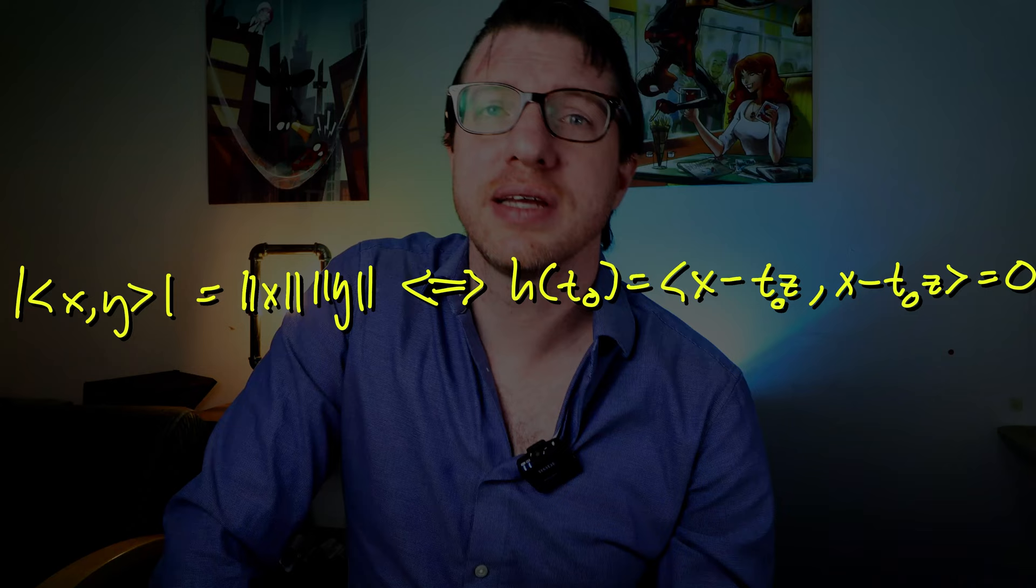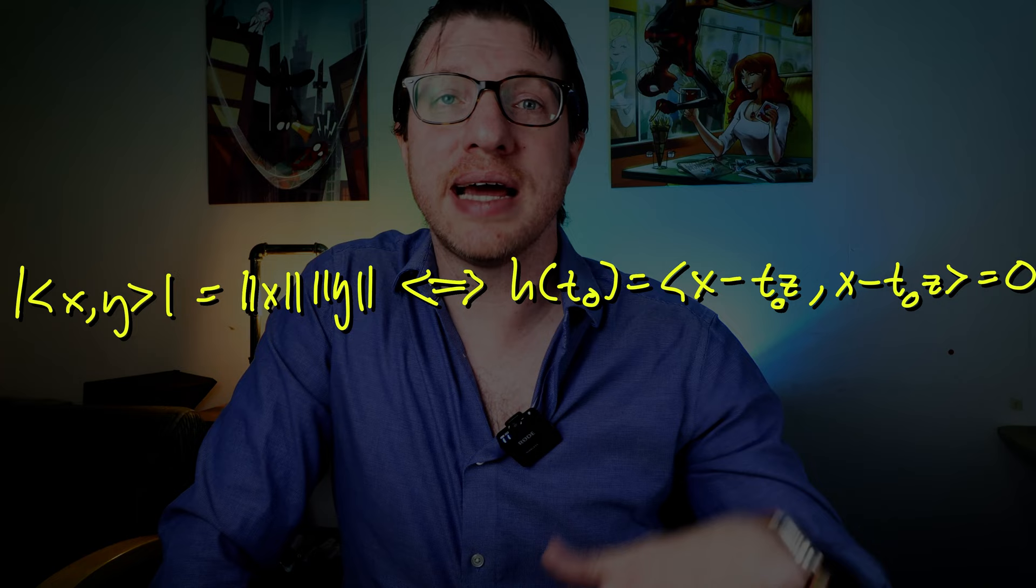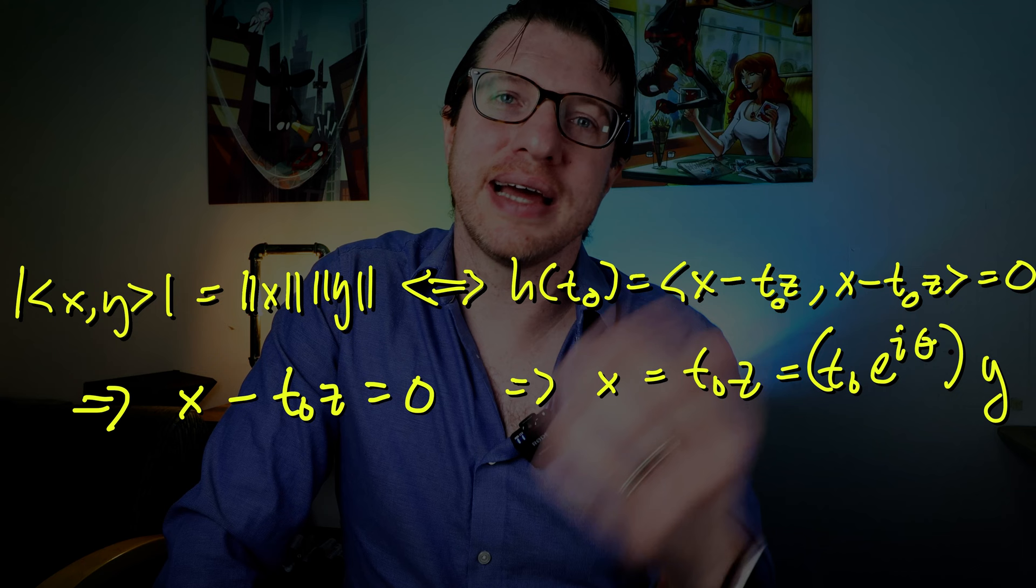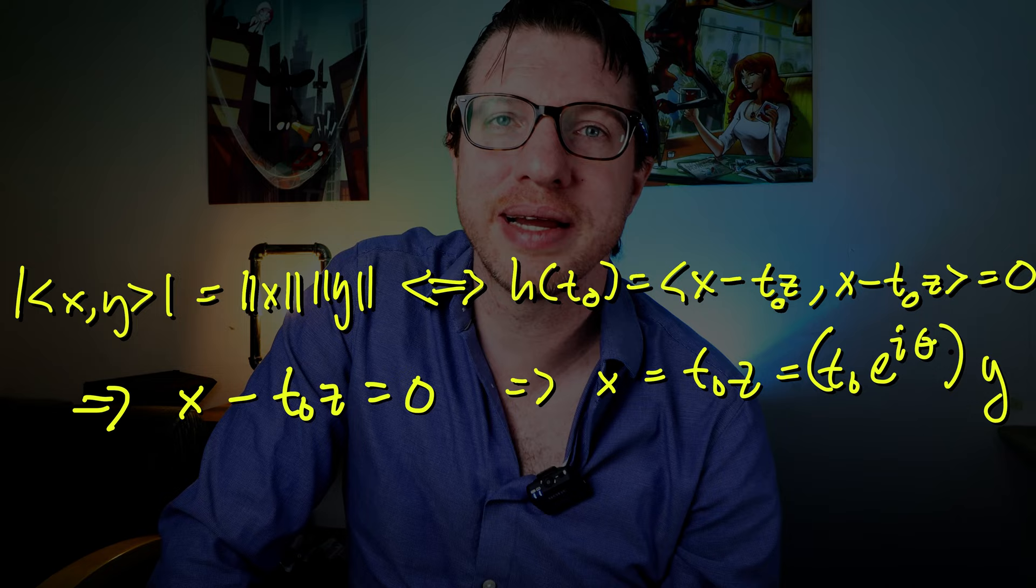Now equality holds if h(t_0) equals zero, which means that x minus e^(iθ) times t_0 times y equals zero, or that x equals e^(iθ) times t_0 times y, and so x is proportional to y, and that's the proof.